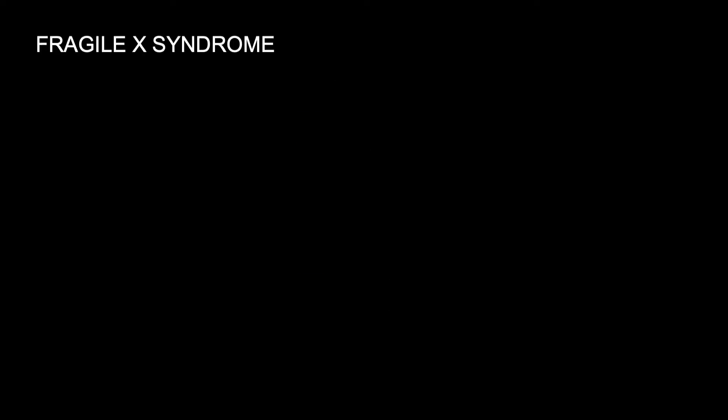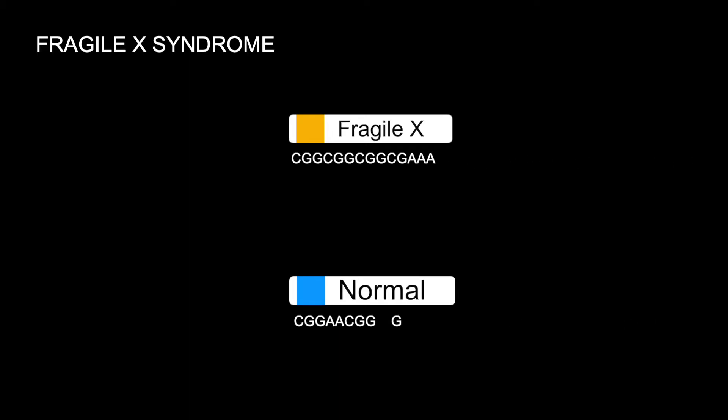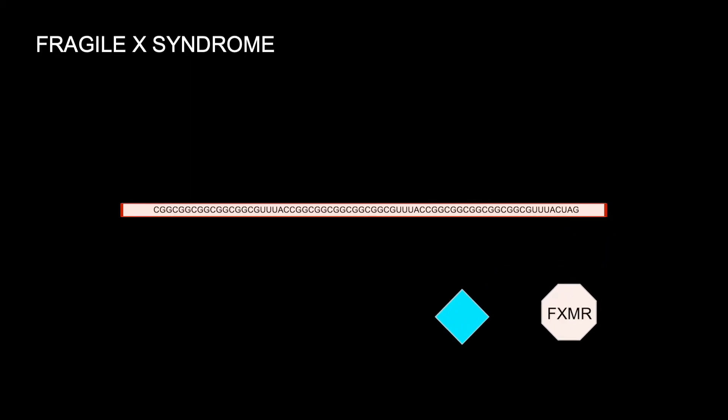Fragile X syndrome is a genetic disorder caused by trinucleotide repeats of CGG in the FMR1 gene during germ cell development. This results in increased methylation, thus decreased expression. This gene is transcribed and translated into a protein called Fragile X mental retardation protein, which is needed for normal brain development. Those with Fragile X syndrome lack this protein and most commonly tend to inherit intellectual disability.